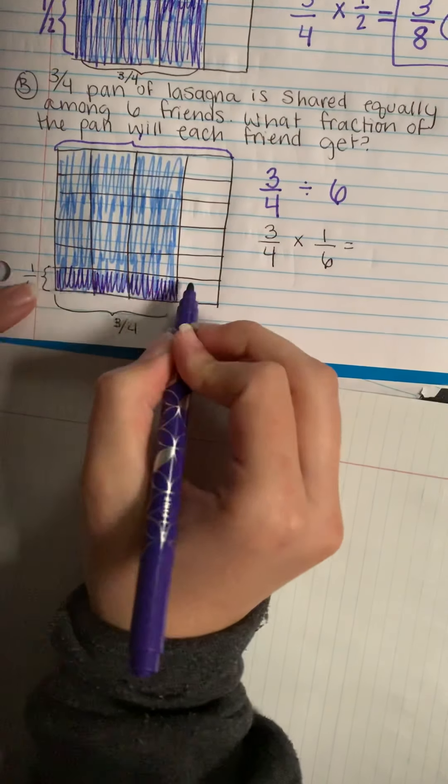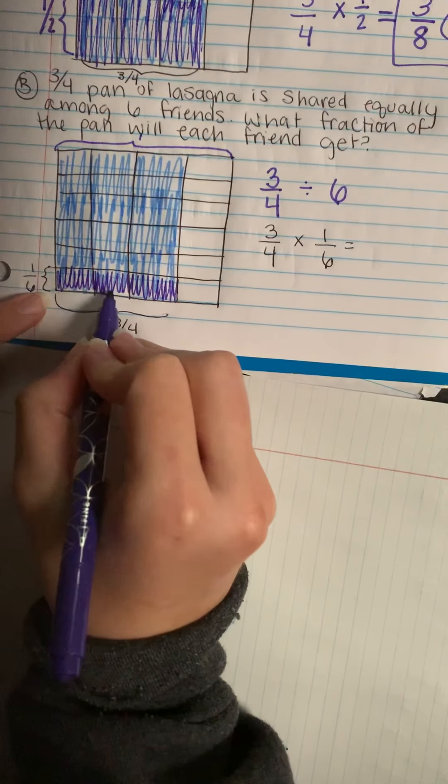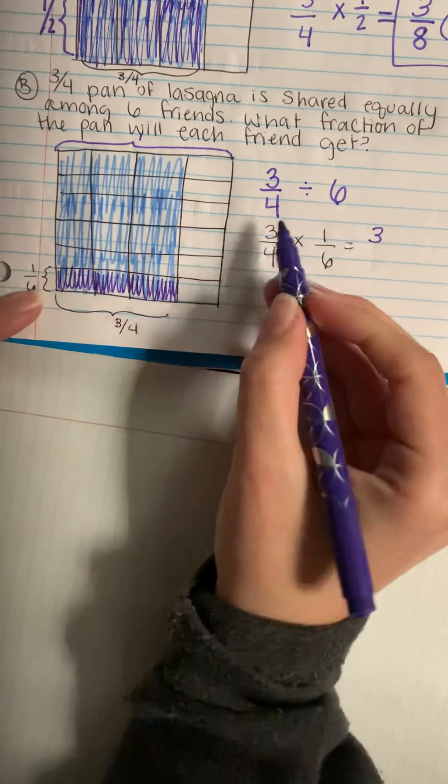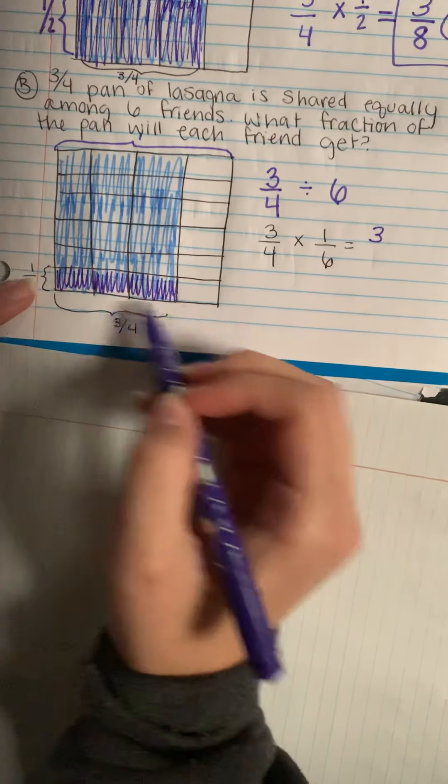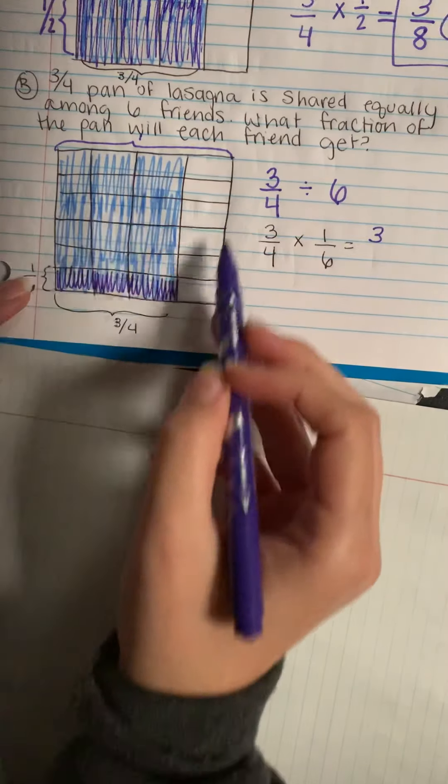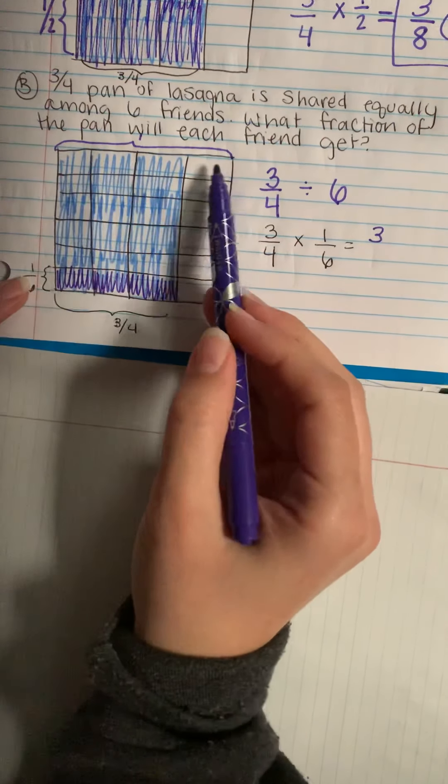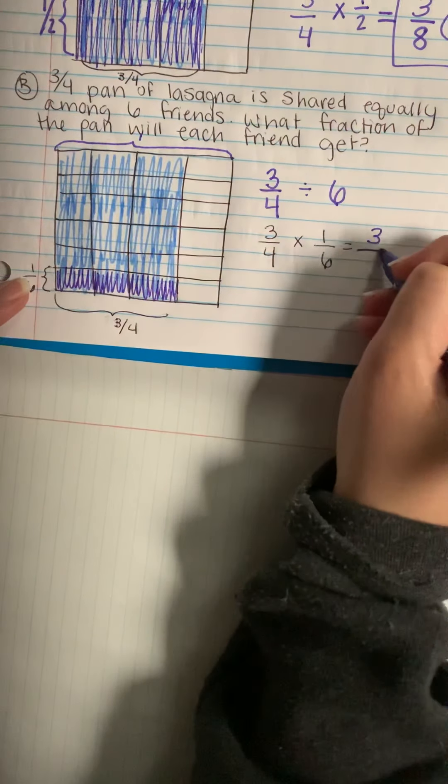So our numerator is where you see both colors. One, two, three, or three times one is three. And our denominator is the entire model. How many pieces do we have all together? So that's four by six is 24.